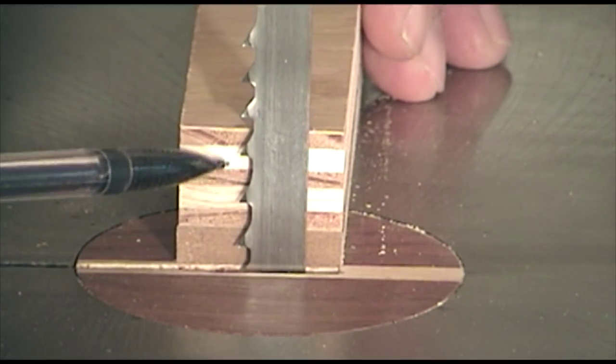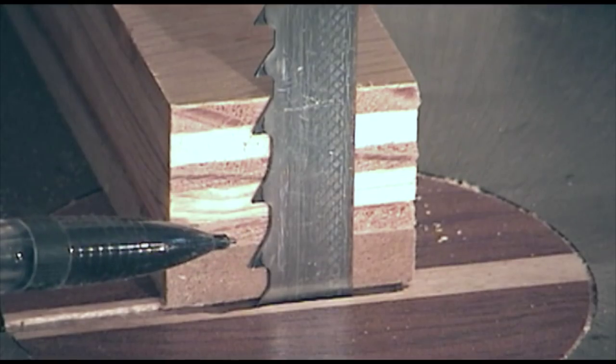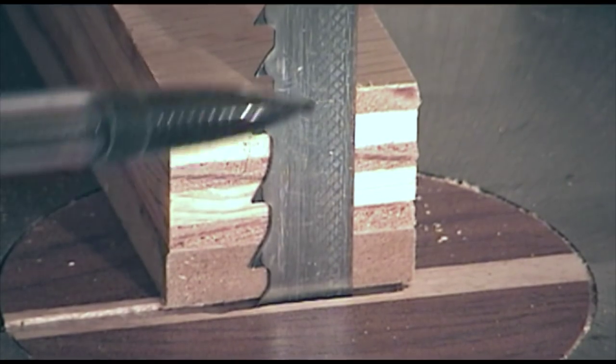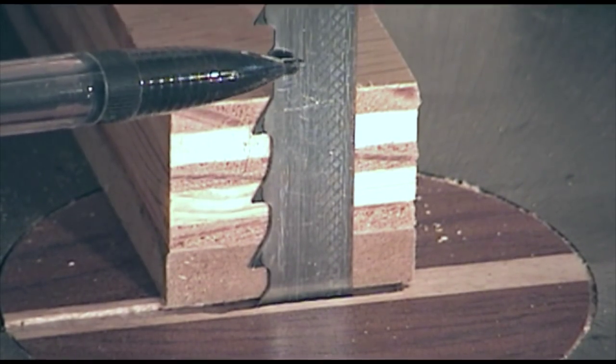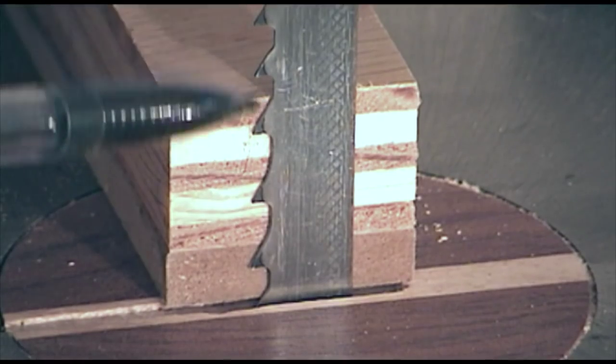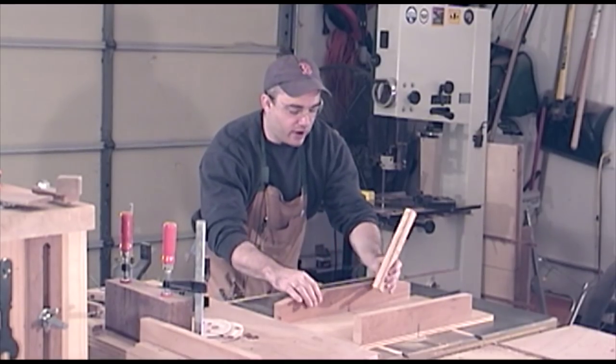Next, we need to make a recess in our freshly cut end for our bandsaw blade. We want our recess to be slightly deeper than the thickness of our bandsaw blade. This is to account for any set there might be in the teeth. I plan on nibbling away that recess by using my table saw with my table saw sled.